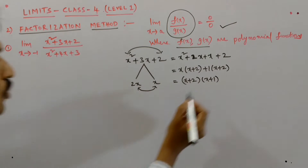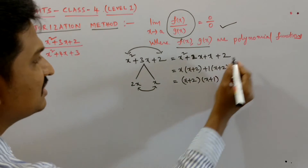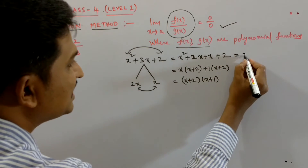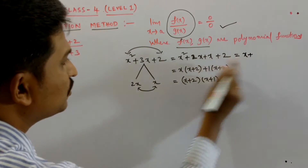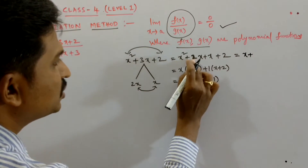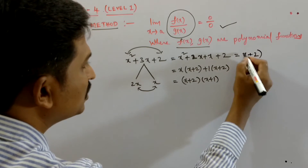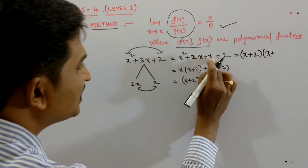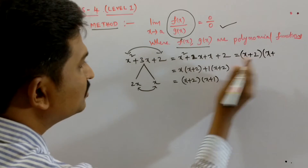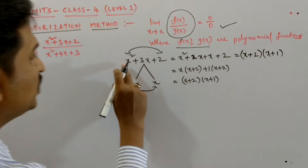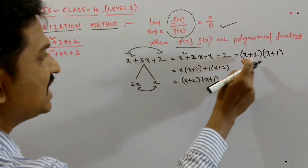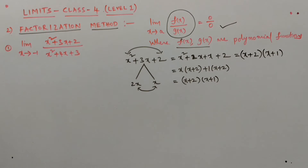After this step, you can write the factors directly. The coefficient of x in the first factor is 2, and in the second factor is 1. So you can directly write x squared plus 3x plus 2 as x plus 2 into x plus 1.